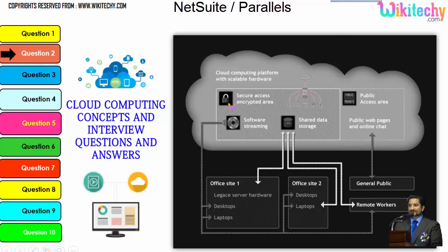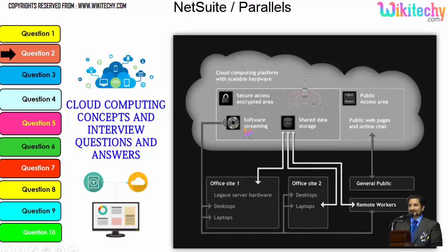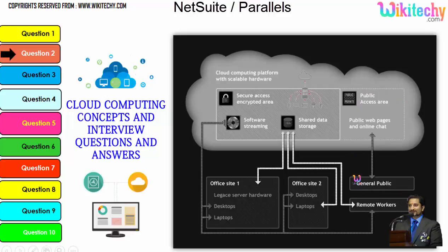Cloud computing will have a public access area with public web pages for end users, and apart from this there is secure data access — you can see the security of cloud computing — along with shared data storage and software streaming. Companies can use it as a private cloud, and the public can use it to access web pages or websites. This is how cloud computing works.